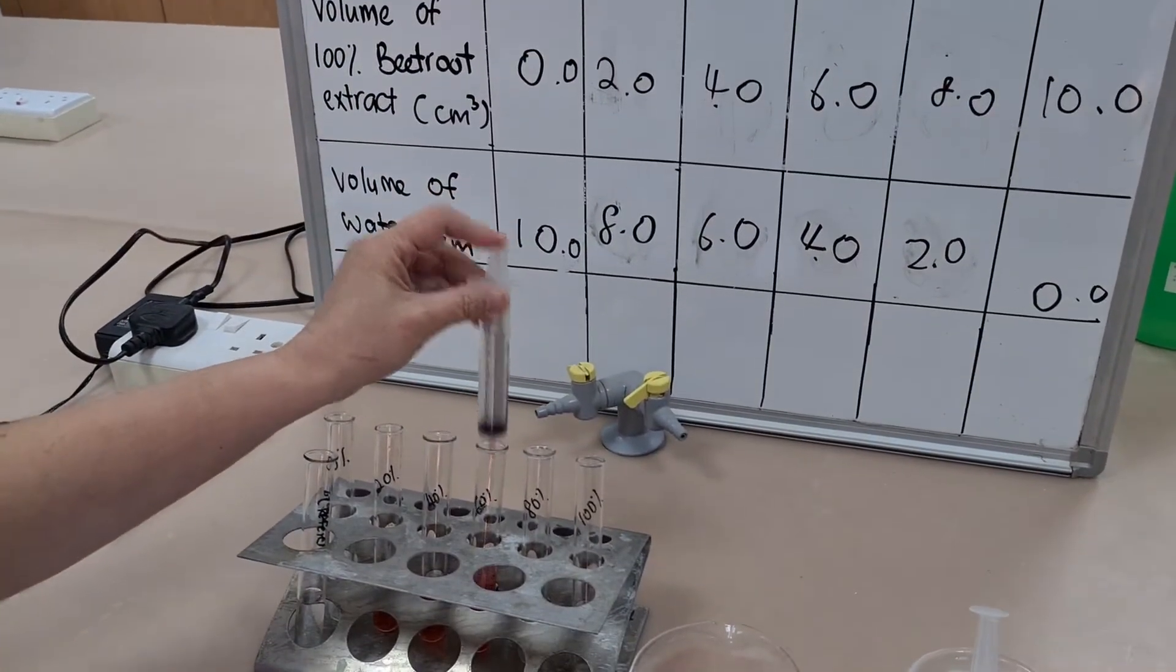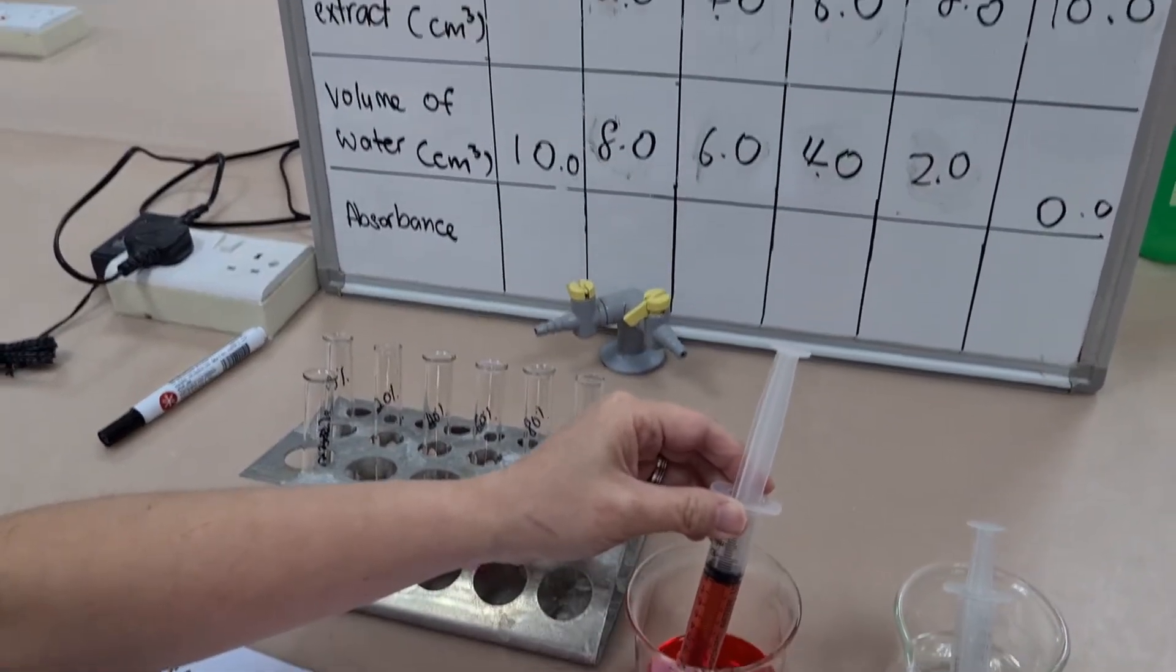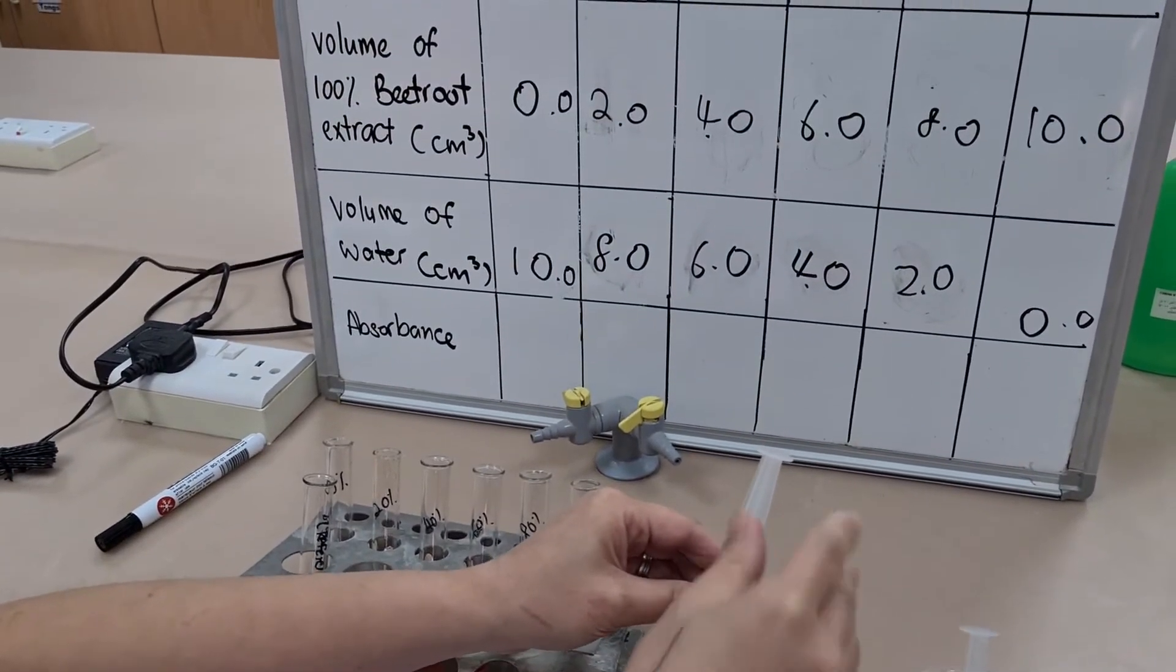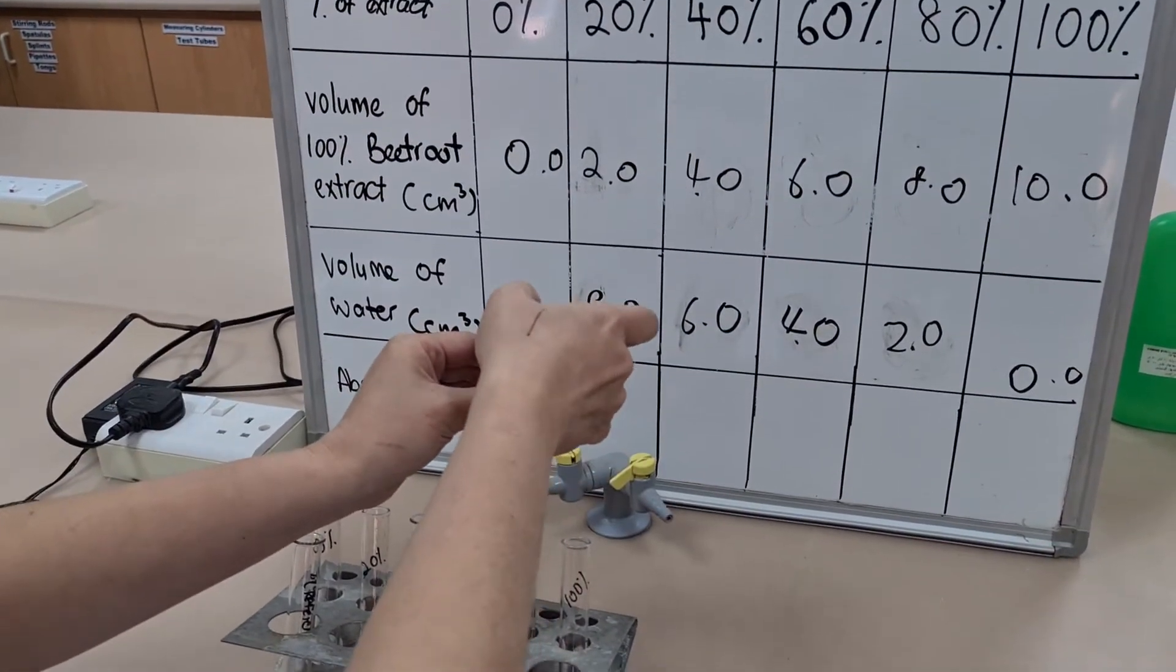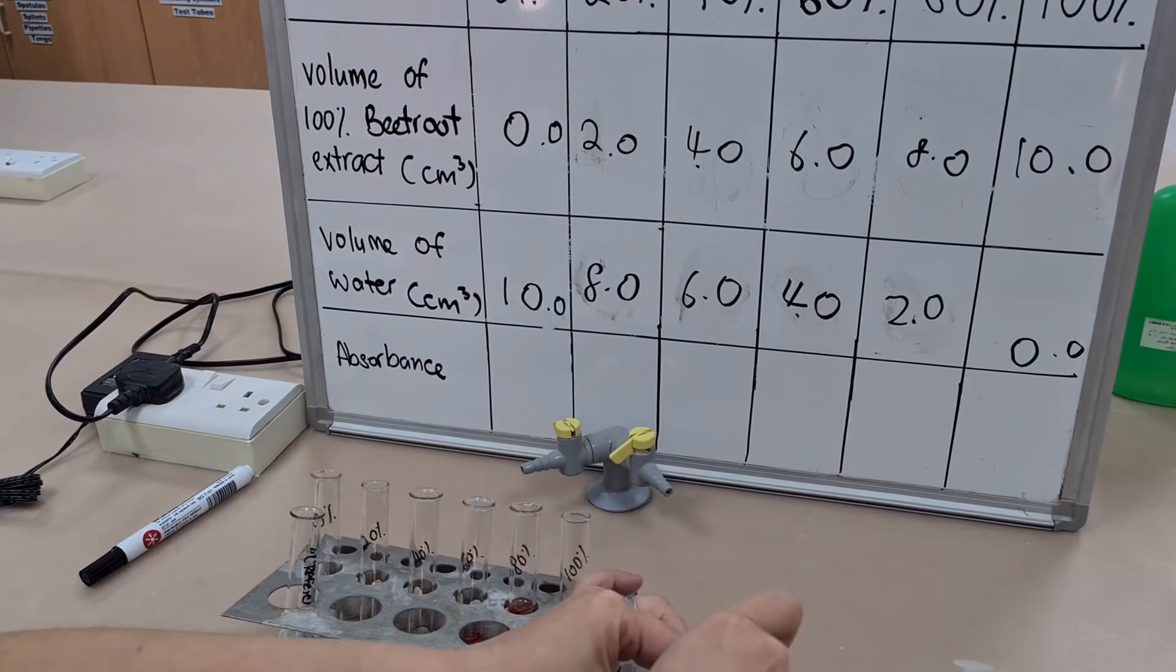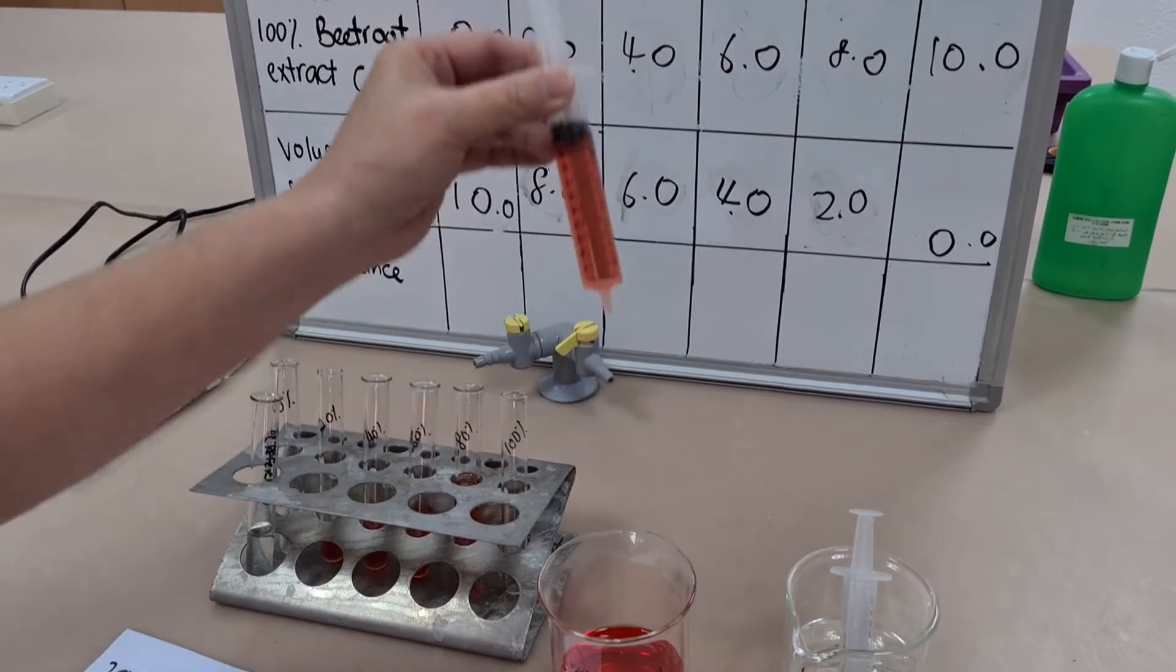And so, as you can see here, I've got my volume of beetroot extract, of which I'm starting with 100 percent, my volume of water in centimeters cubed, and at the bottom, I've got absorbance. That's because later on, I'll be using my dilutions in a colorimeter.